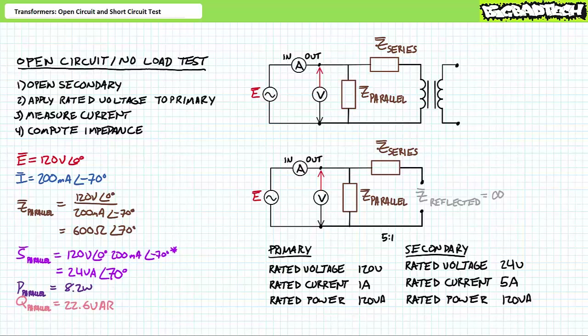A subsequent application of the AC power formula demonstrates the parallel impedance inside the transformer equivalent circuit at the rated voltage experiences 24 volt-amperes of apparent power, of which 8.2 watts is directed towards real power and 22.6 VARs is directed towards a reactive interchange. The 8.2 watts of real power consumed by the parallel impedance is not being directed towards useful output and would be considered a loss to this system.